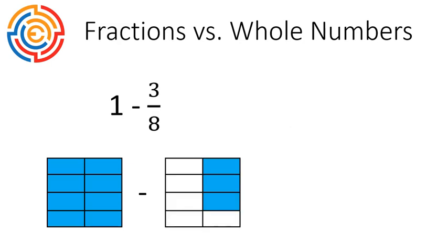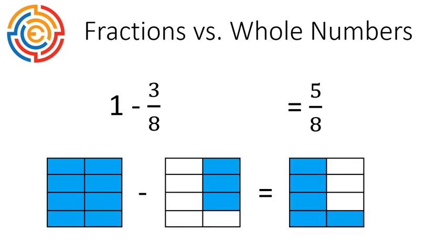When we're subtracting fractions, it looks like this. The whole piece, minus three out of eight of the pieces, gives us five out of eight pieces left over.